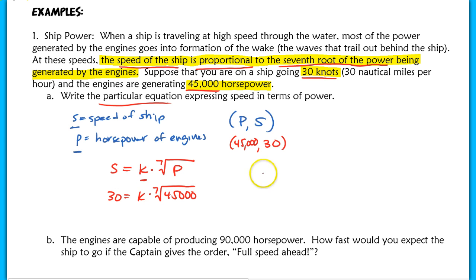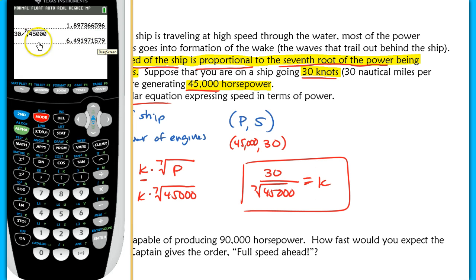If I want to isolate k, I'm going to divide out the seventh root of 45,000. So this is something that I would store in my calculator, because it's probably going to give me some kind of crazy irrational number. I went ahead and solved for that k value already. So I'm going to stow it now. So hit stow, and then alpha k. So I'm storing it as k. There's the number stored.